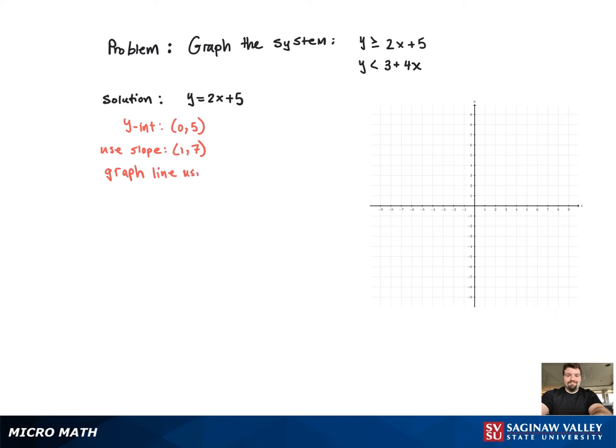Since it's greater than or equal to, that means I'm going to graph a solid line. Notice that in that first inequality, it's greater than or equal to. So there's the line.